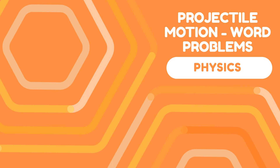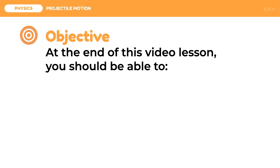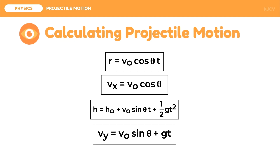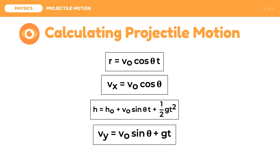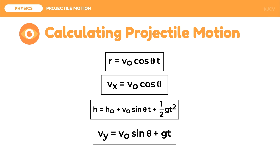In this lesson we are going to discuss word problems on projectile motion. At the end of this video lesson you should be able to perform calculations on projectiles launched horizontally and at an angle. Let us first review the four equations that we are going to use for projectile motion: displacement along x or range, horizontal velocity, displacement along y or height, and vertical velocity.